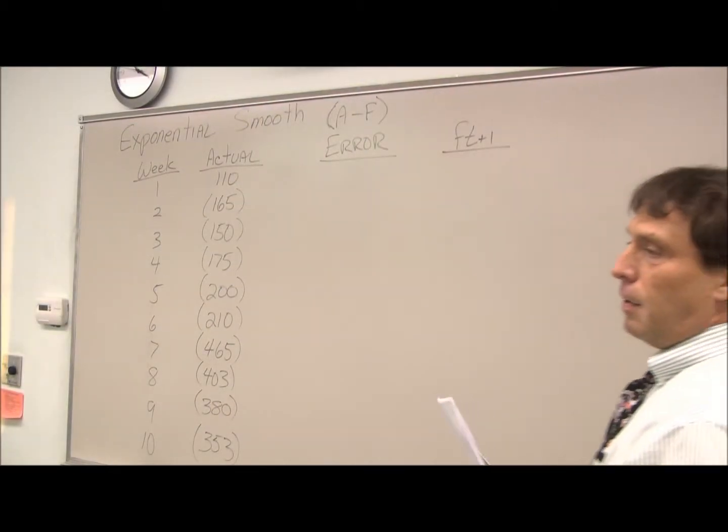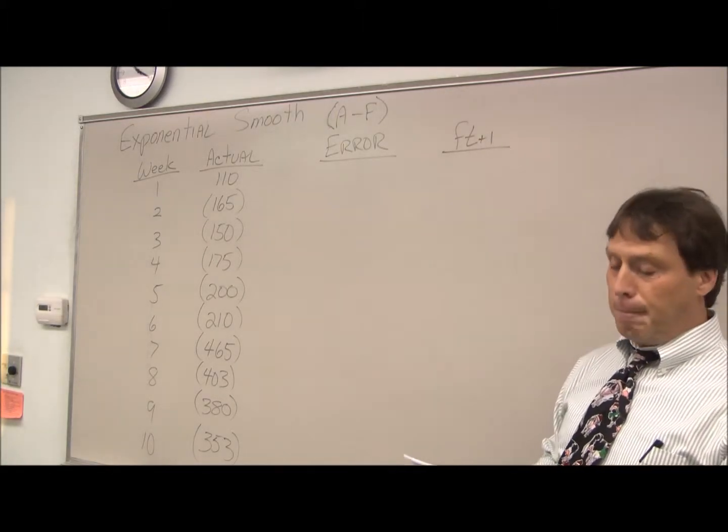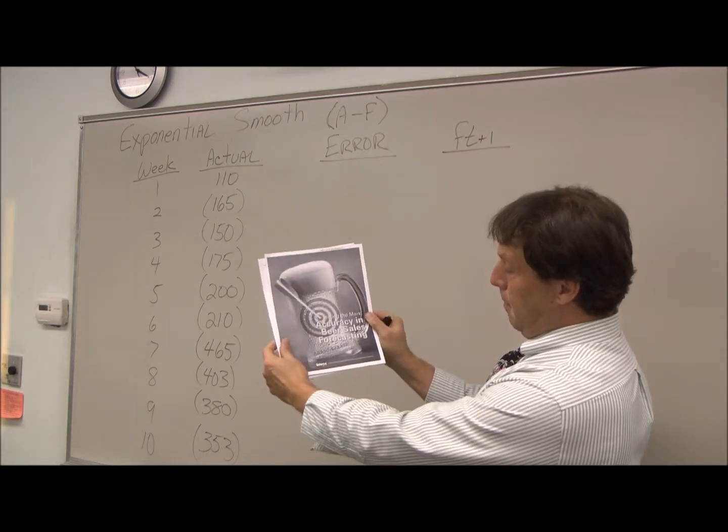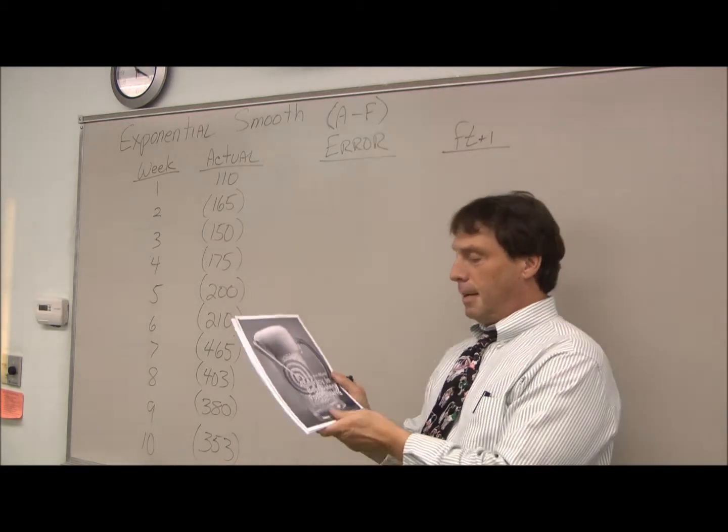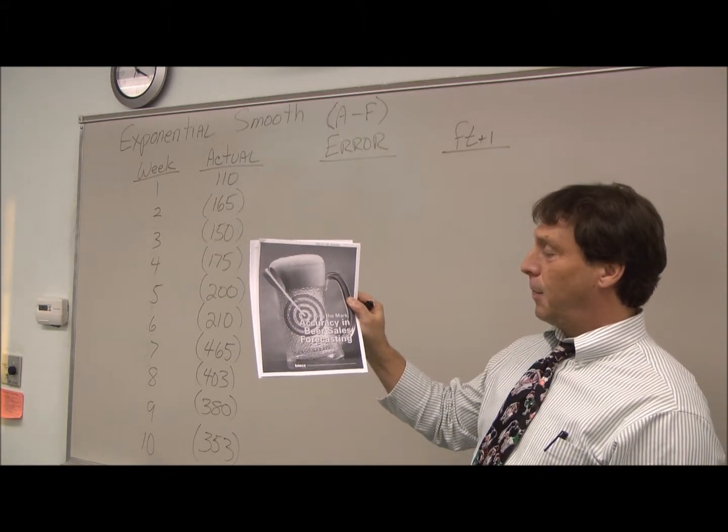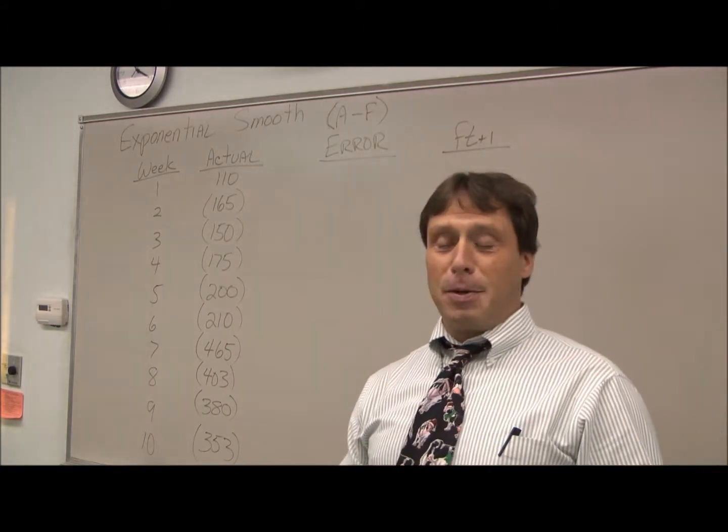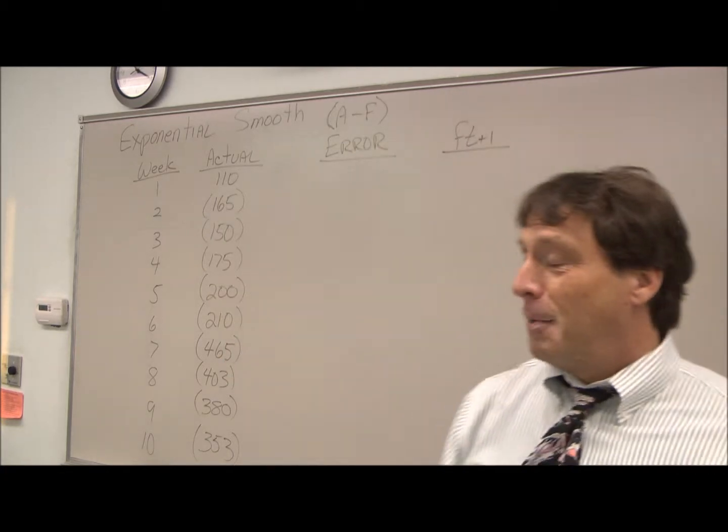All right, today we're going to look at a forecasting method called exponential smoothing. I got this idea from the beer industry electronic commerce coalition. They did a forecast accuracy and beer sales forecasting, so I thought it would be interesting to use their numbers. Some of the numbers have been modified a little bit just for class demonstration, but these are numbers basically taken from their 12-ounce cans.